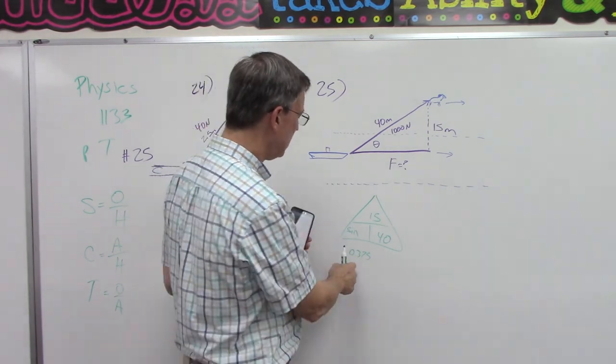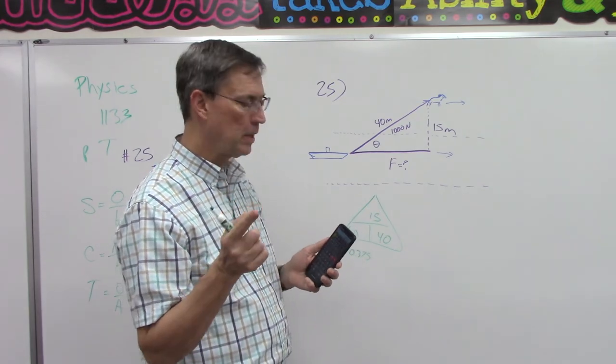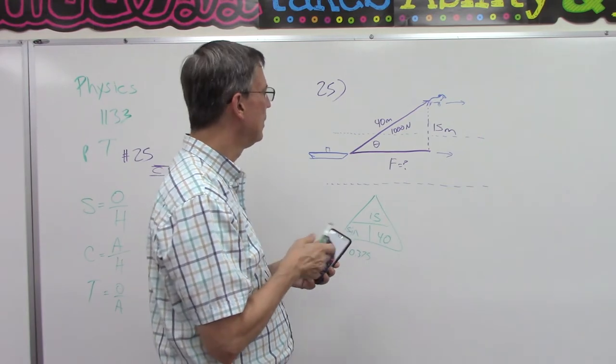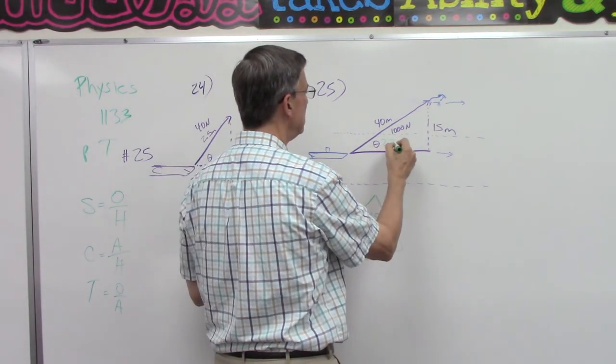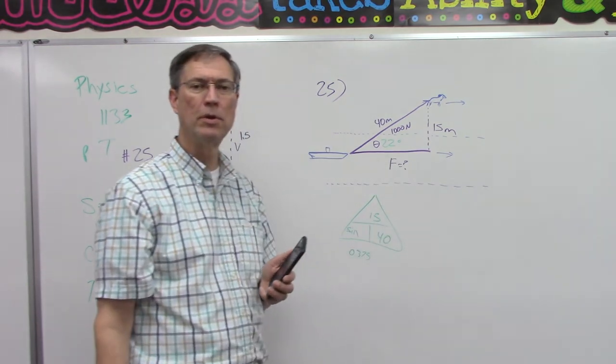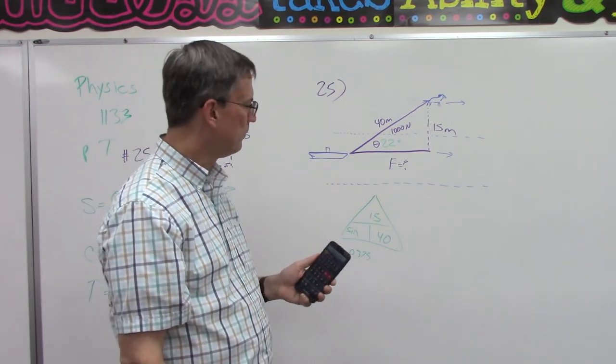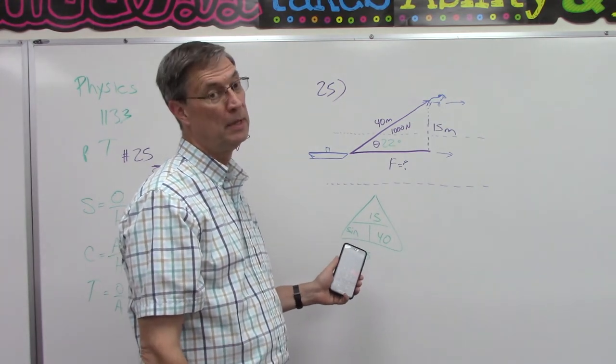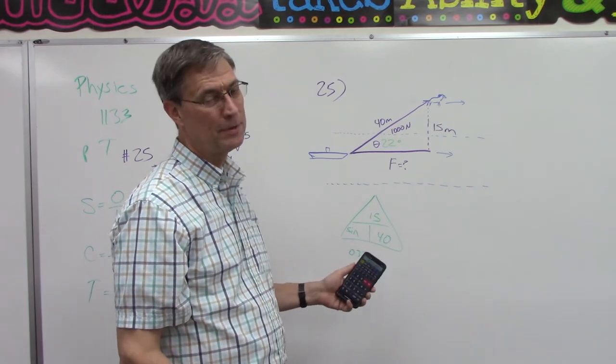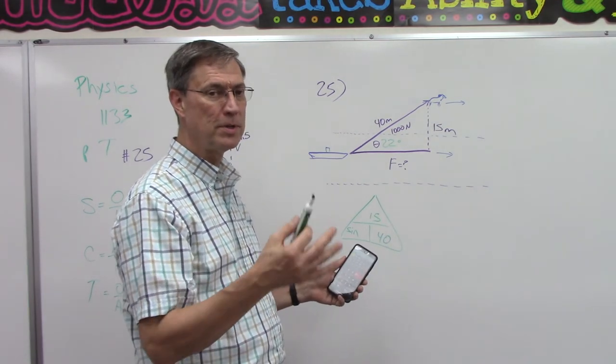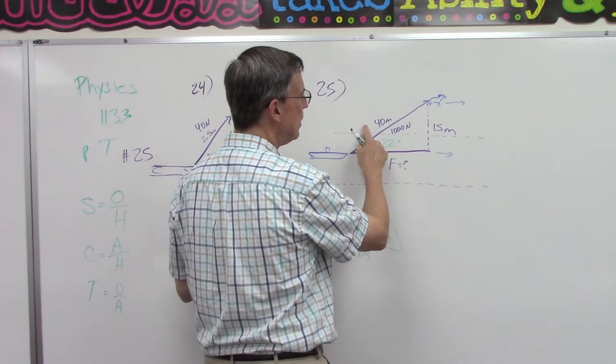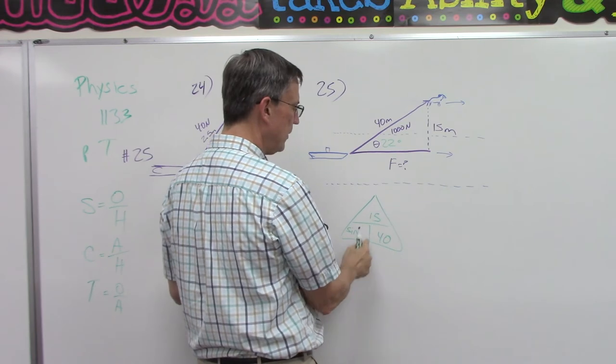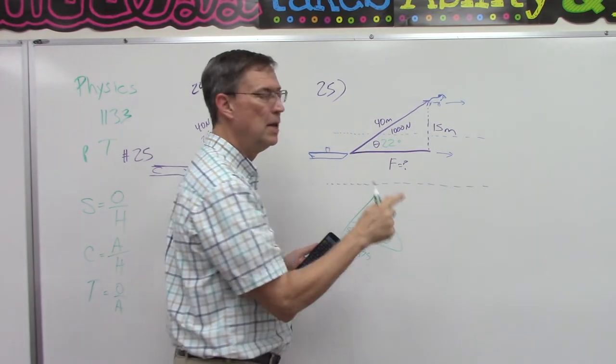Now, that is the sine, but that doesn't tell us the angle directly. We have to do shift sine of 0.375 to get the angle, and I'm going to round it off to 22 degrees. Are you with me? Make sure you walk through those steps and see how to do it, because you're going to have to do this on the rest of the problems and on the check-up, and the self-test, and the pace-test. So I want you to see all these steps that are involved. So we first used these two numbers to find the decimal, which we can then do the second function sign to get the angle, 22 degrees.